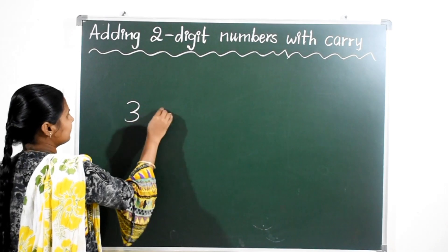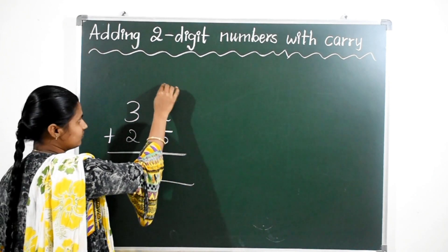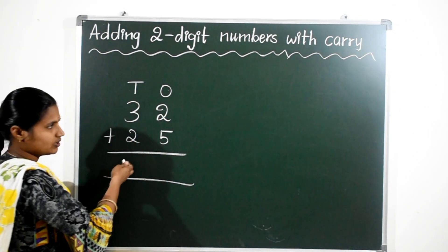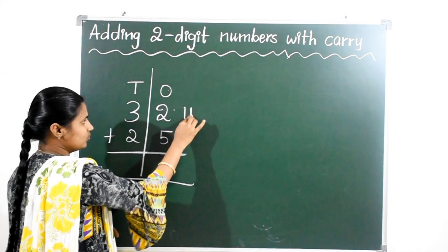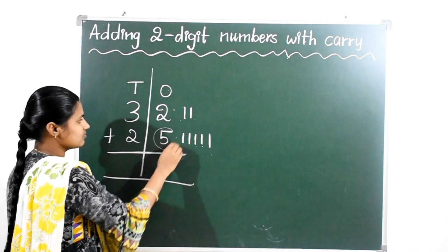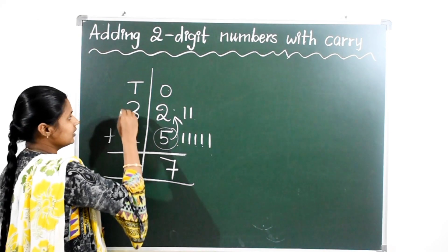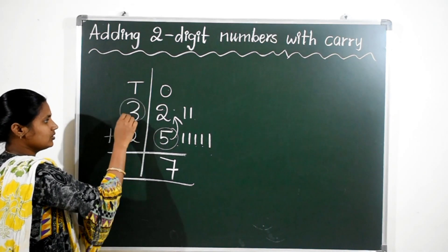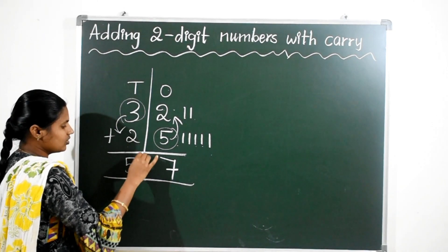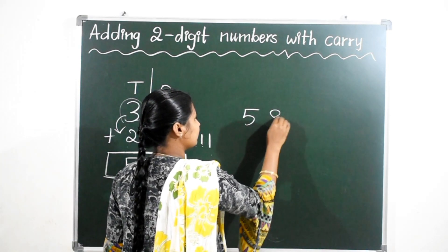Here, generally for 2-digit numbers, we have 1s place values and 10s place values. Here, 1s place values are 2 and 5, and 10s place values are 3 and 2. First, add the 1s place values: 2 and 5. 2 and 5 total — 1, 2, 3, 4, 5, 6, 7. So here 5 is the big number; 5 after 6, 7. We got 1s place value is 7. Now come to 10s place values: 3 and 2. 3 is the big number; 3 after 2 numbers: 4 and 5. Total answer: 57.